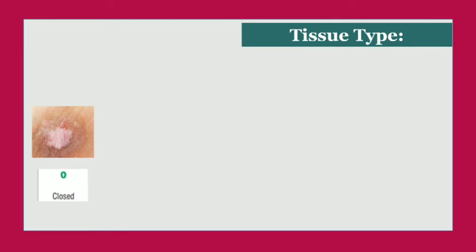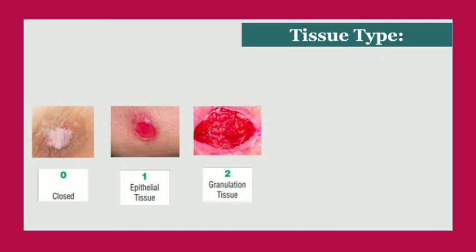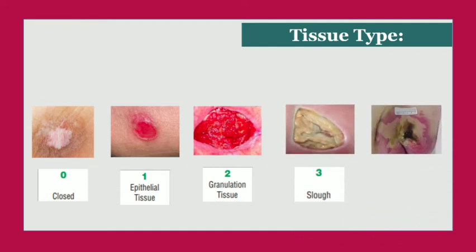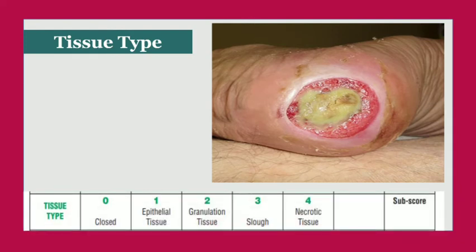Score 0: wound completely covered with epithelium (new skin). Score 1: superficial ulcer with new pink or shiny tissue growing from edges. Score 2: granulation tissue — pink or beefy red with a shiny moist granular appearance. Score 3: slough — yellow or white tissue adhering in strings or thick clumps. Score 4: necrotic tissue — black, brown, or tan tissue adhering firmly to wound bed, also known as eschar. In the example, yellow tissue adheres to the ulcer, so the score is 3 (slough).